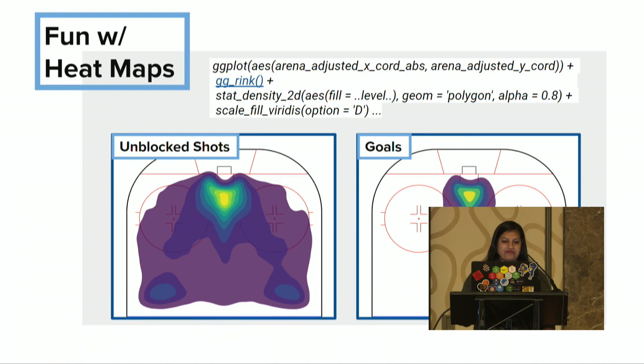The first thing we can do before we get back to expected goals — heat maps. Everyone loves heat maps. There is also code available to make your own rink in ggplot. I use that here to make a heat map of all the unblocked shots in this data and where they were taken. You can see they're generally taken closer to the net. I also made a heat map of the goals. This alone can tell you that shot location matters — if it didn't matter, these heat maps would look the same. But clearly, shots closer to the net are more dangerous, which also just makes sense logically.